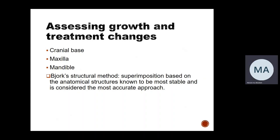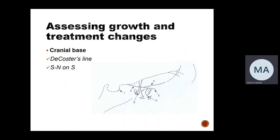The structural method is so far the best method to be used for superimposition. It is based on anatomical structures known to be most stable — not perfectly stable, but considered stable compared to other structures. We will talk about the different structures used for superimposition.